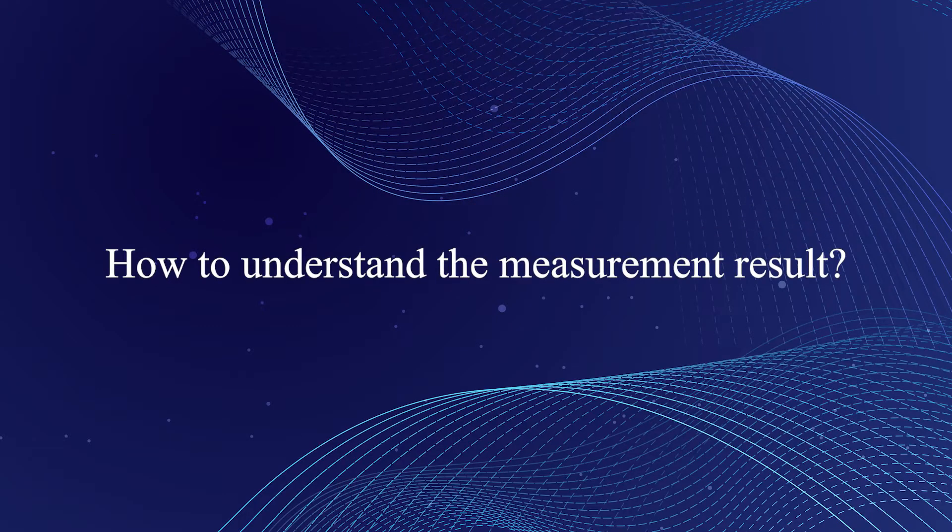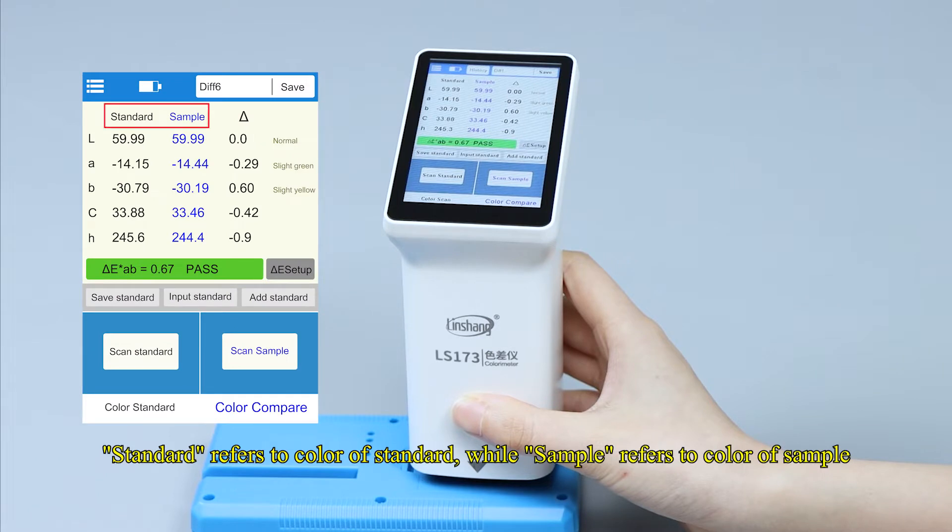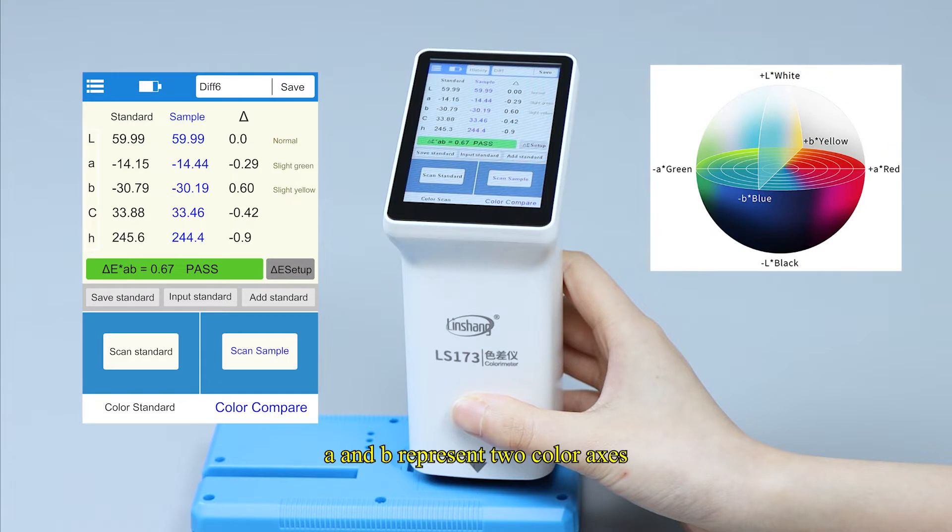How to understand the measurement result. Standard refers to color of standard, while sample refers to color of sample. L represents the brightness of the color. A and B represent two color axes. A represents the red-green channel of color. B represents the yellow-blue channel of color. C represents chroma and H represents hue.